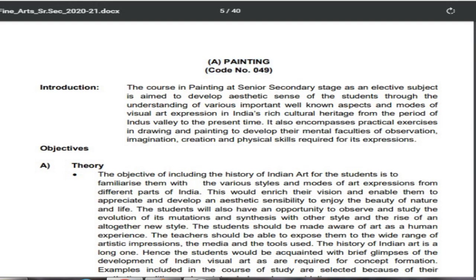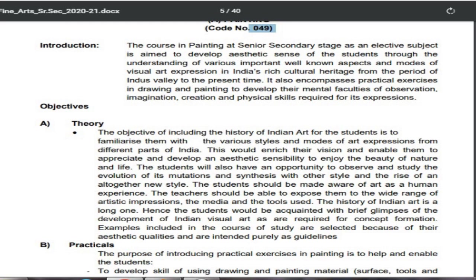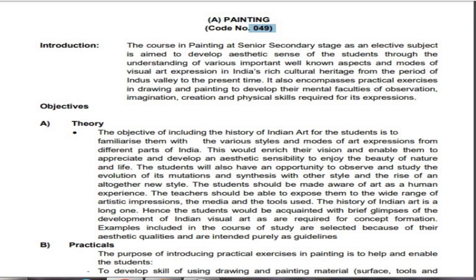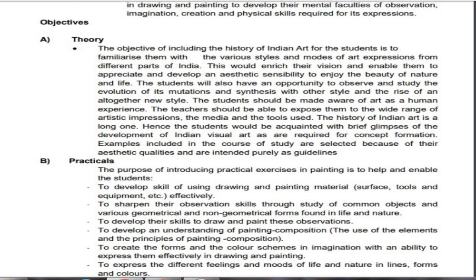Now here, the main thing: the code of painting is 049. The basic understanding of painting for the senior secondary stage — it is an elective subject. Elective means a subject which you are choosing to develop your basic skills about your favorite subject. In the objectives, both theory and practical are there.